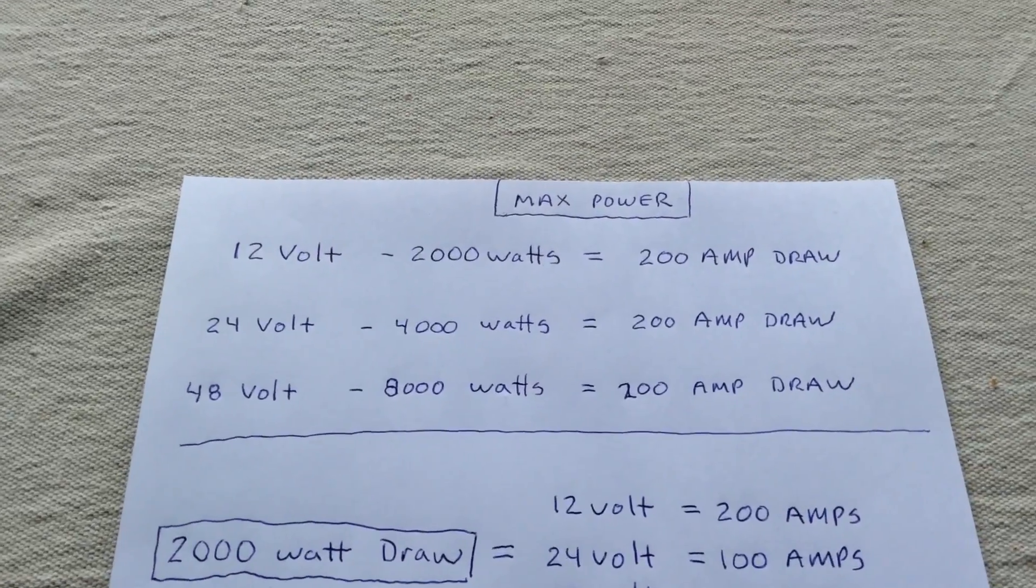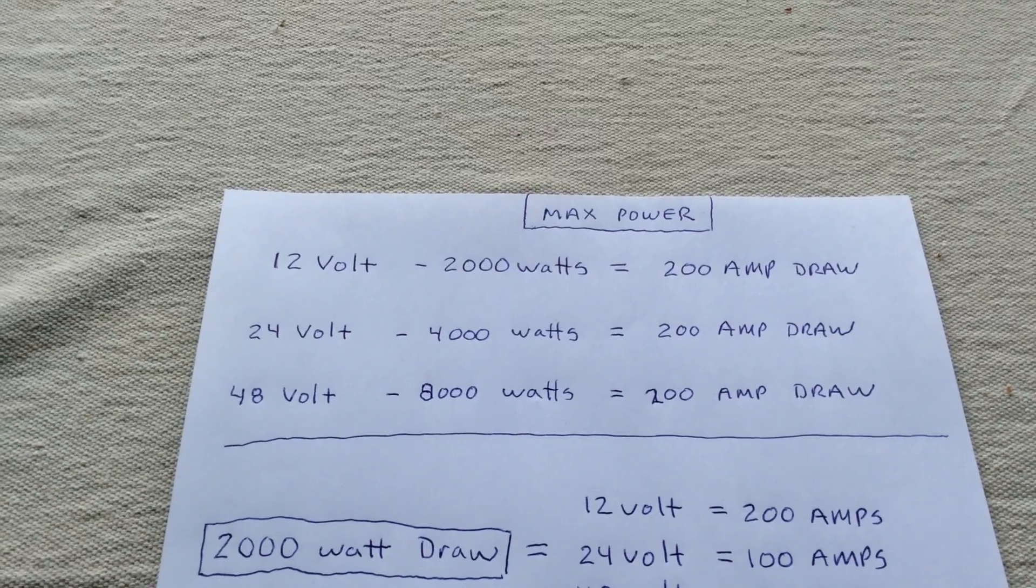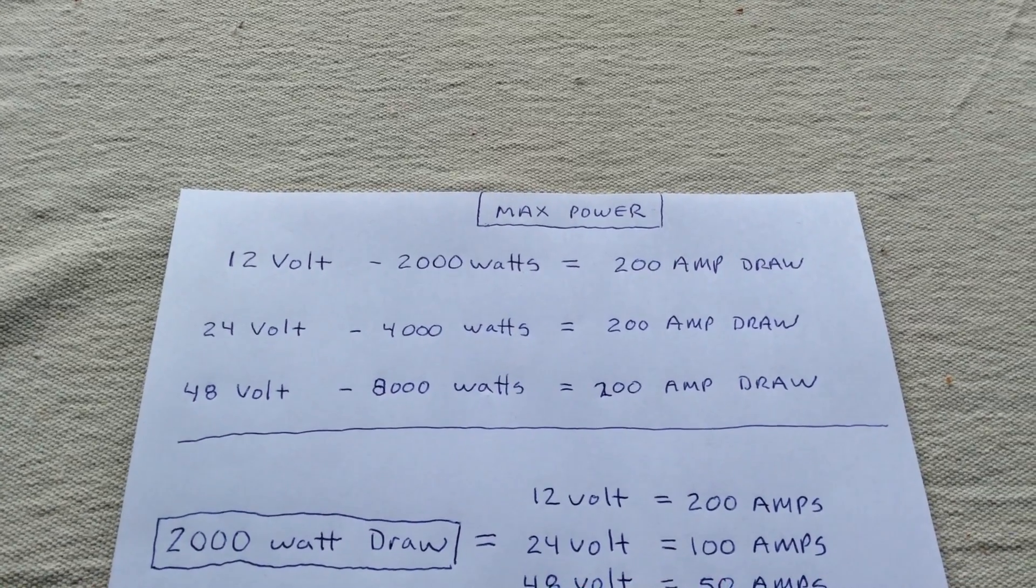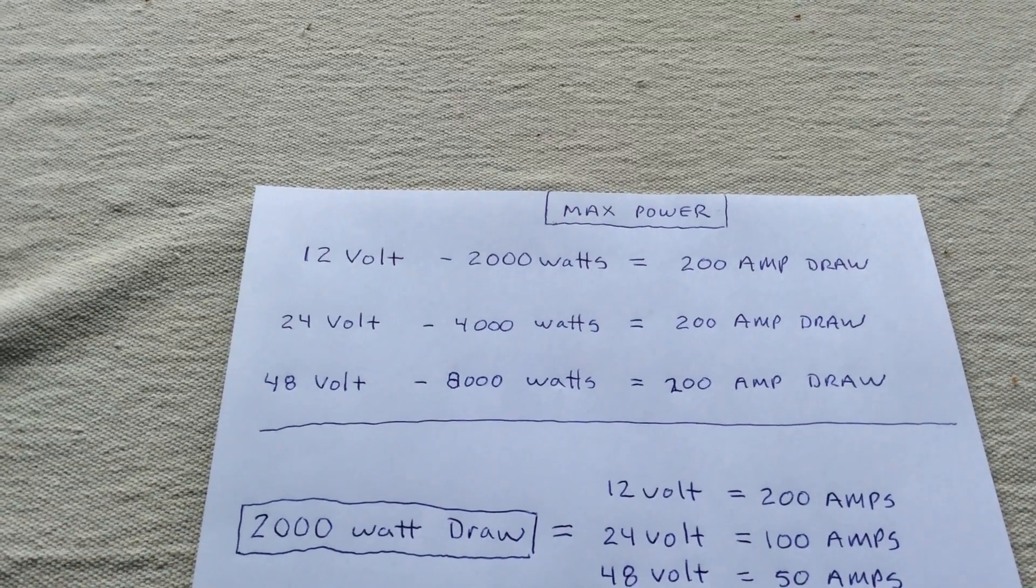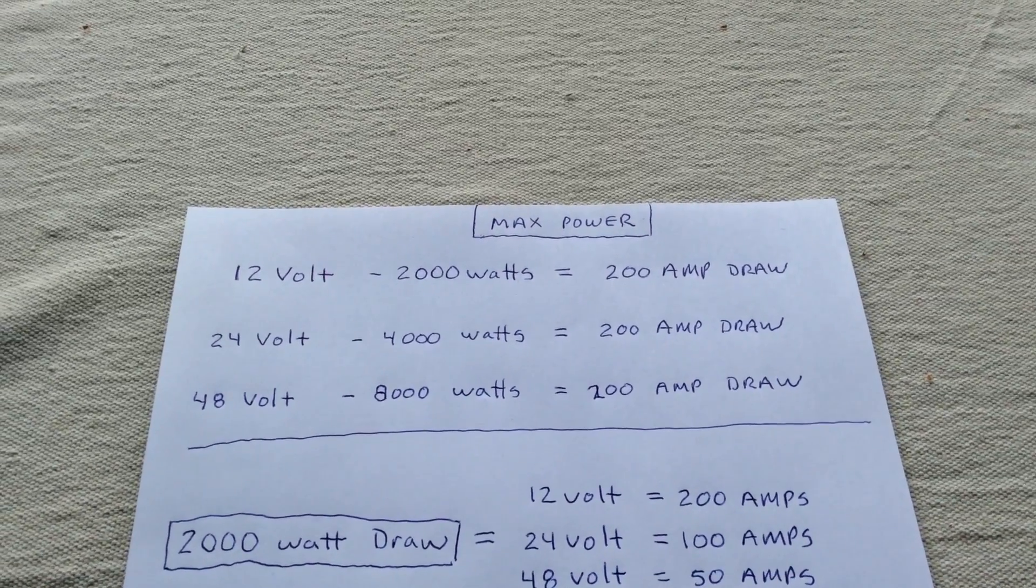Here's my 12 volt system. At 2,000 watts, you're going to draw 200 amps. Now if I have a 24 volt system with the same battery bank, I can go 4,000 watts to draw the same 200 amps. And then your large system is 48 volt. I can go 8,000 watts and draw 200 amps.